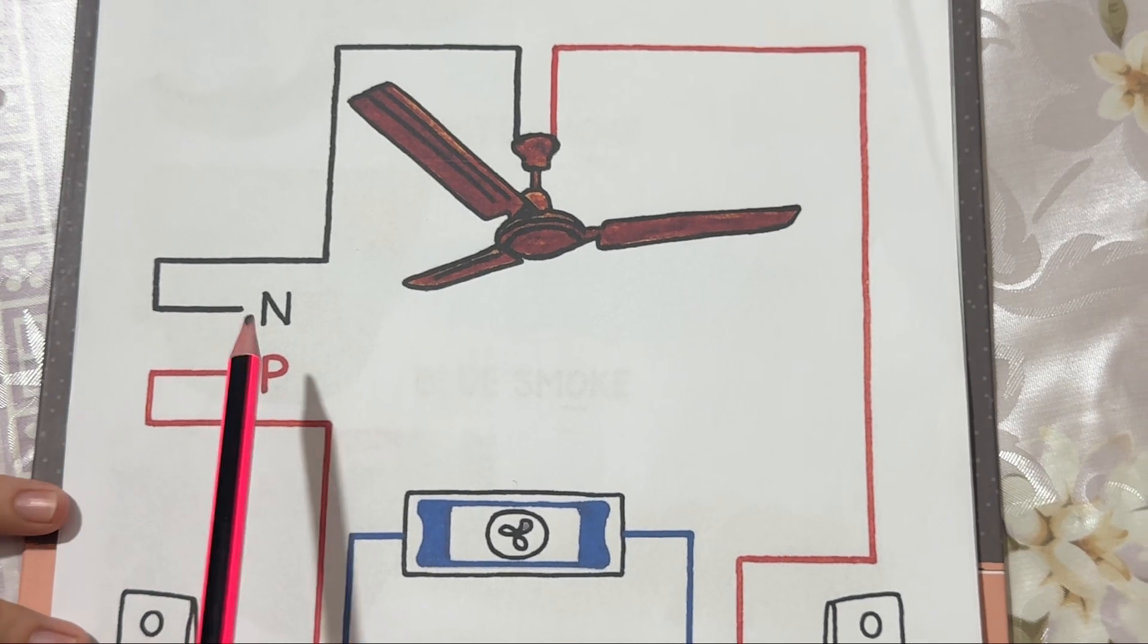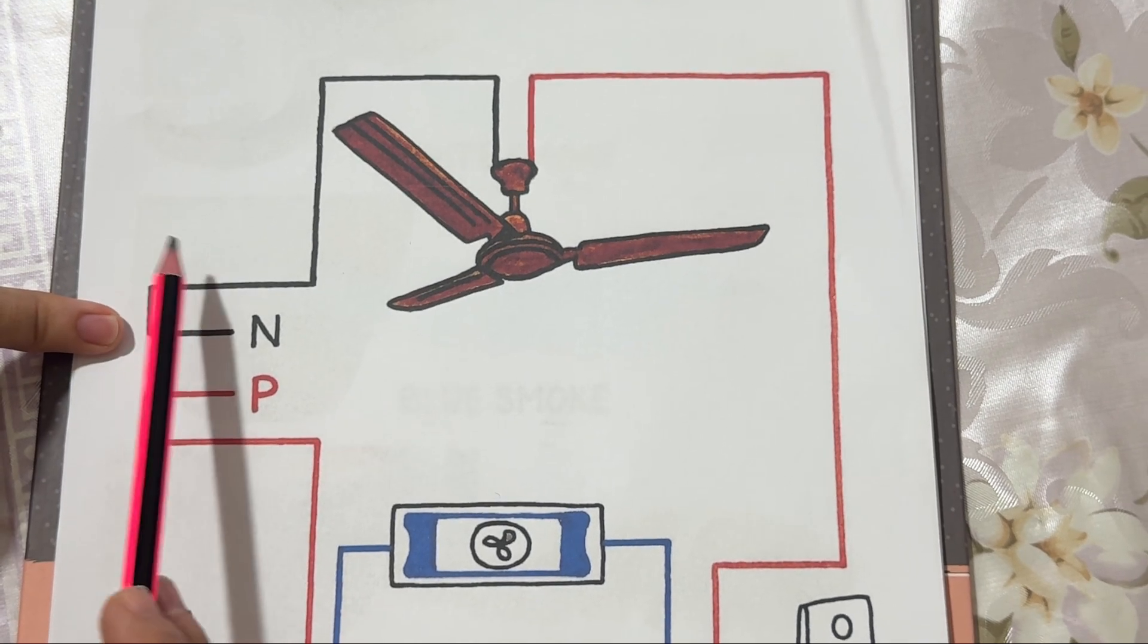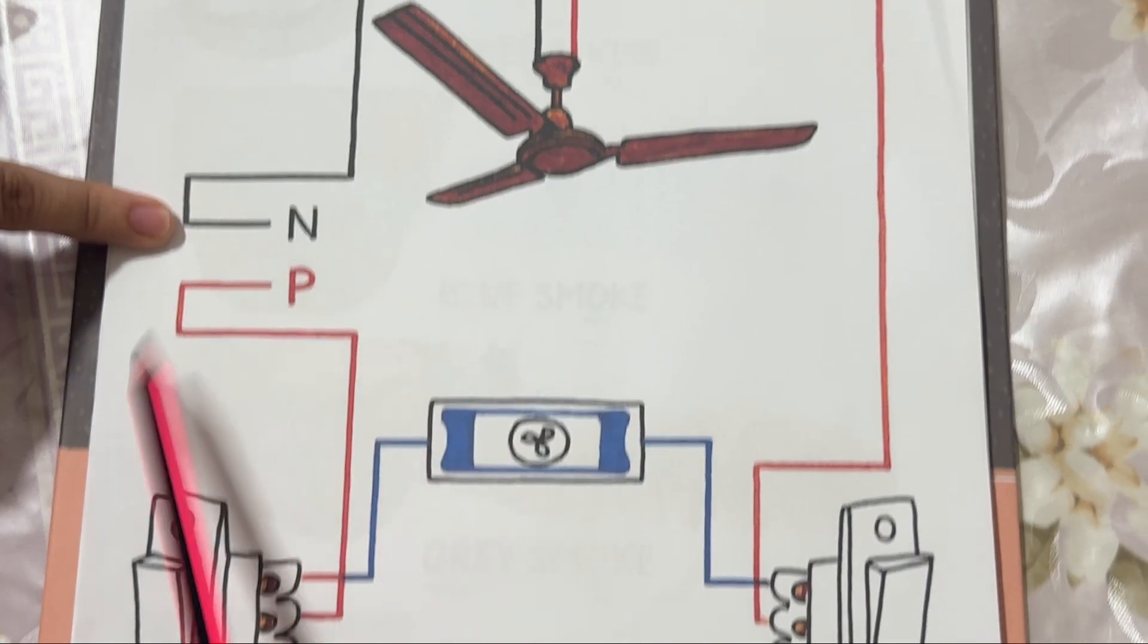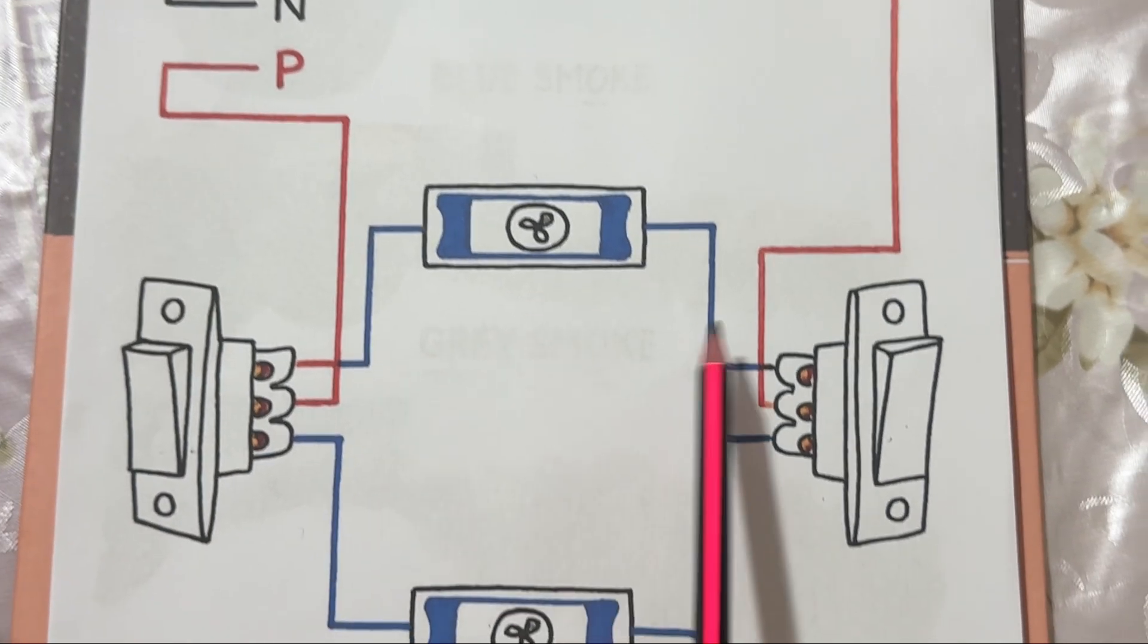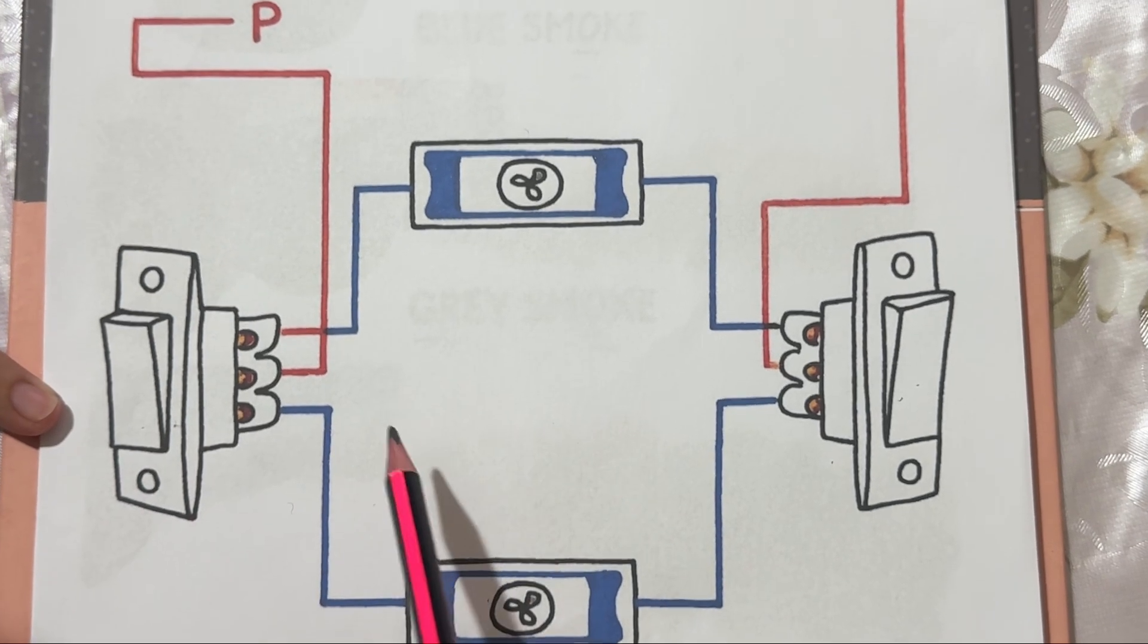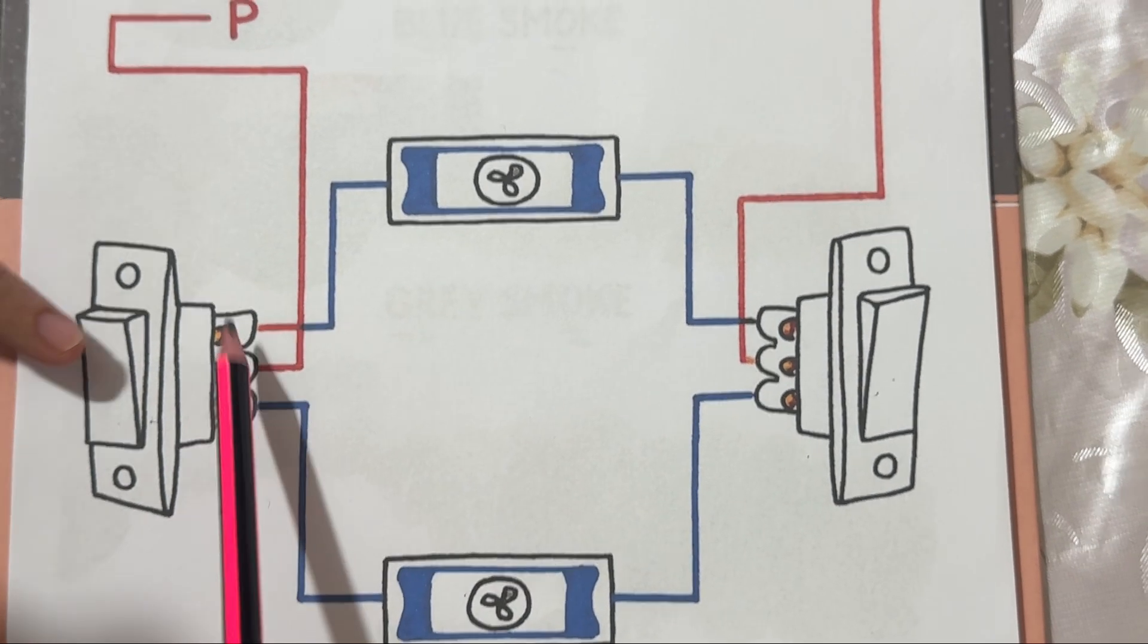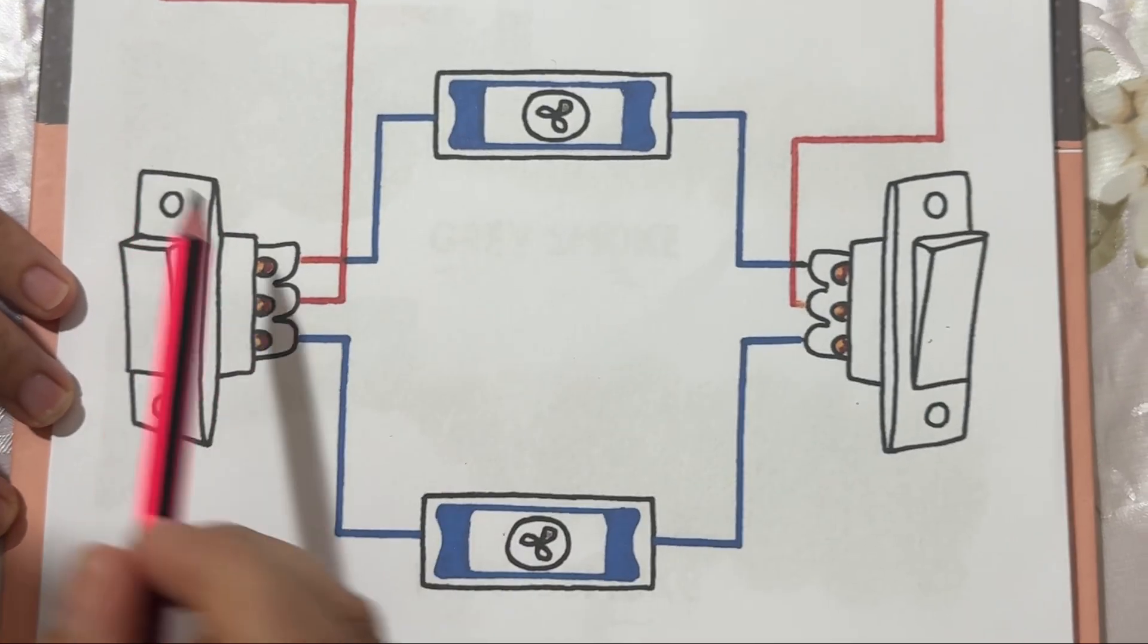The wiring starts from the power supply. The neutral wire (black) is directly connected to the fan. The phase wire (red) is routed through the switches and regulators before reaching the fan. Each switch acts as a controller for the fan. When either switch is turned on, electricity flows from the phase wire through the connected regulator and finally reaches the fan motor.